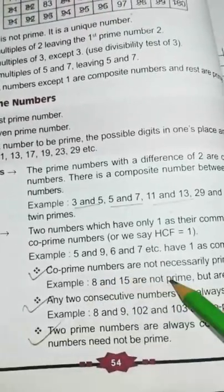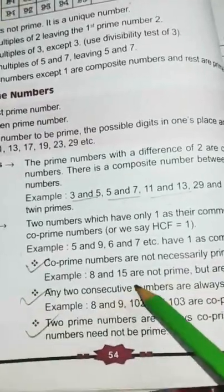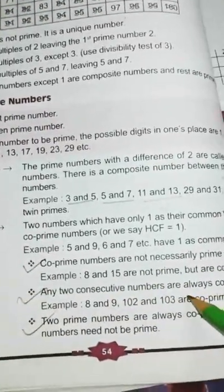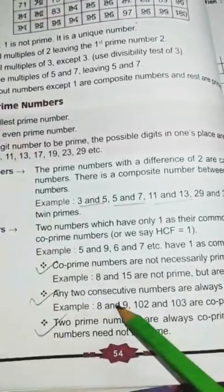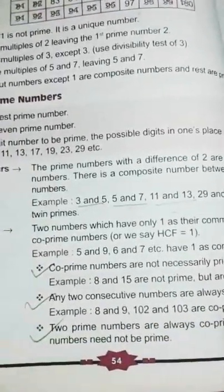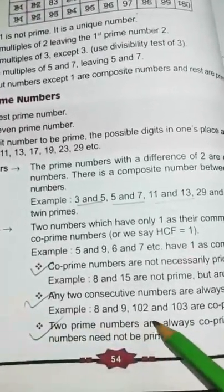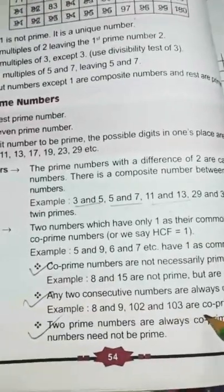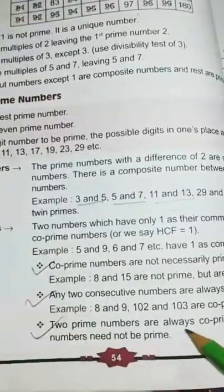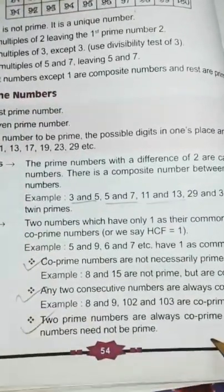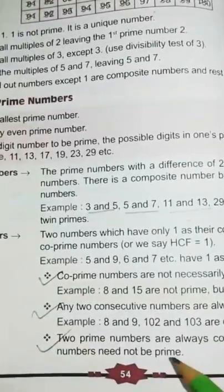Then, co-prime numbers are not necessarily prime numbers. For example, 8 and 15 are not prime, but they are co-prime. Any two consecutive numbers are always co-prime. For example, 8 and 9, 102 and 103 are co-prime numbers. Two prime numbers are always co-prime, but two co-prime numbers need not be prime.